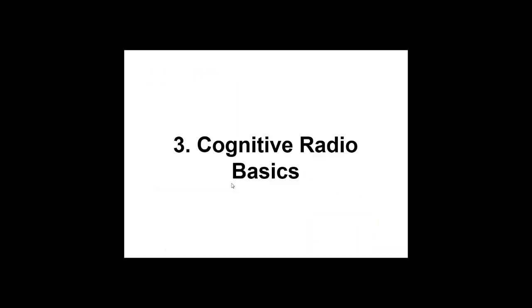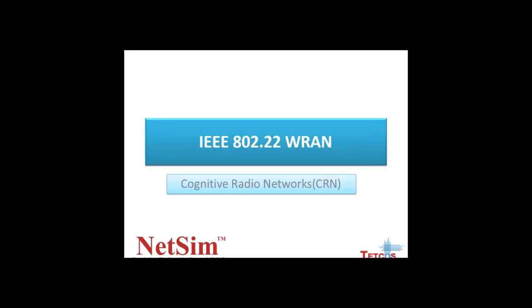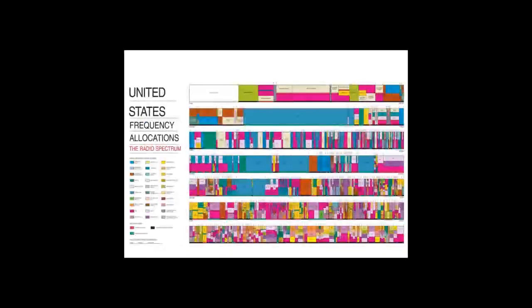Now I will explain basics on cognitive radio networks. The IEEE standard which defines cognitive radio is IEEE 802.22 WRAN, which stands for Wireless Regional Area Network. In this slide you can see the graphical representation of static allocation of frequency for various communications like TV broadcasting, maritime mobile, aeronautical mobile, etc. in the United States. This allocation was done during 2002.